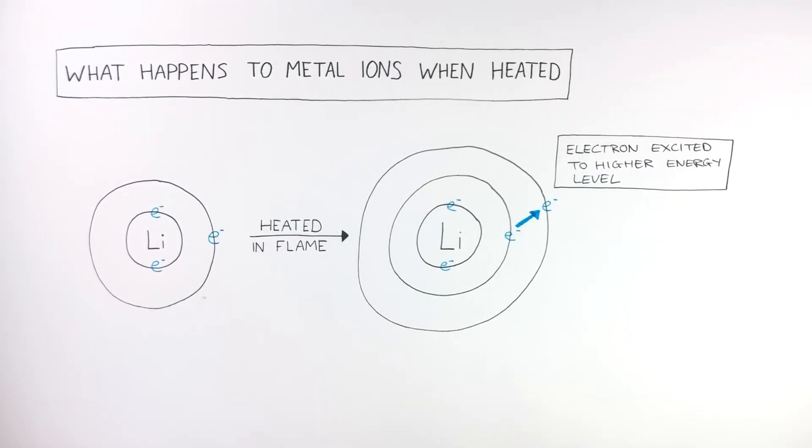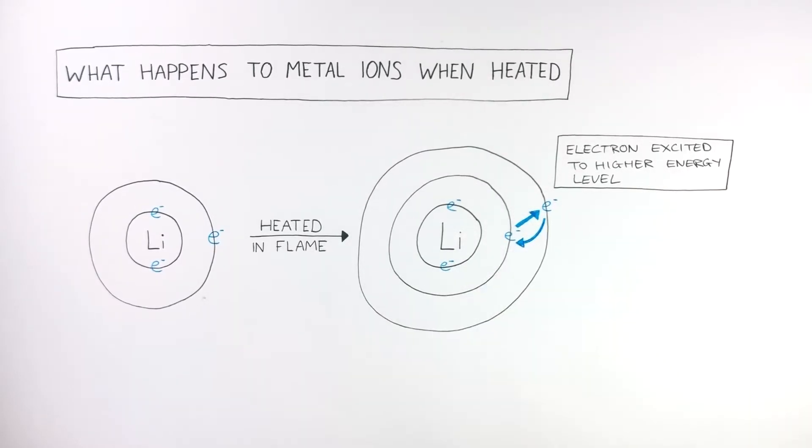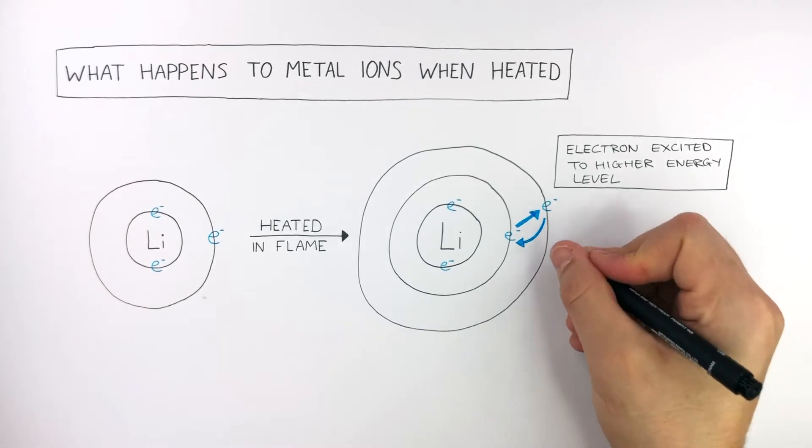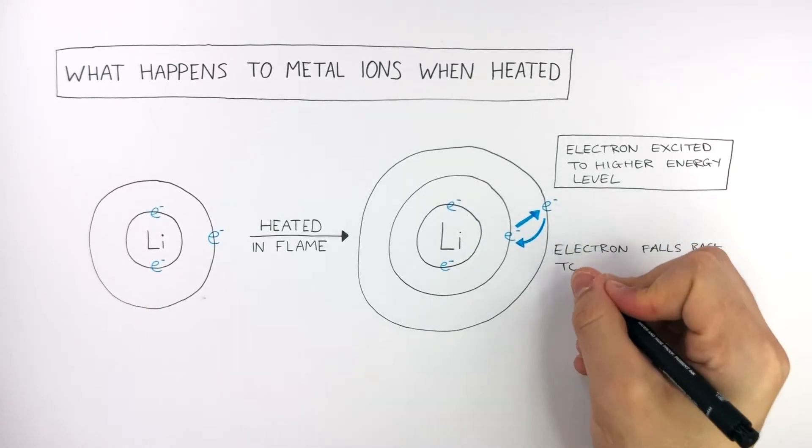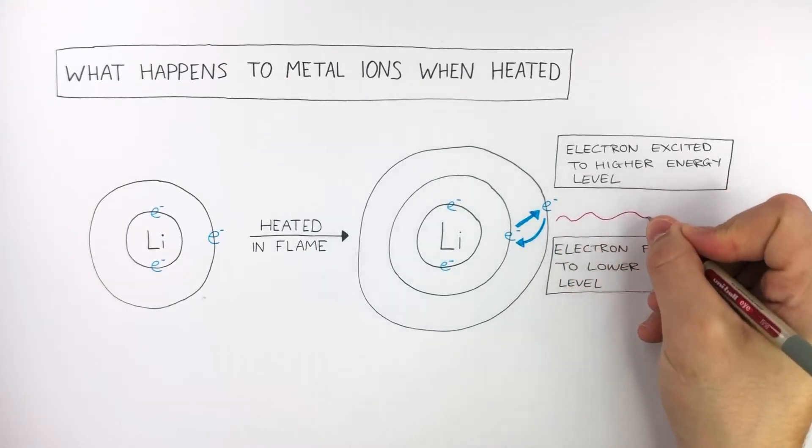This electron is not stable at the higher energy level, so the electron falls back to the lower energy level. When this happens, light is emitted.